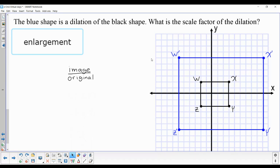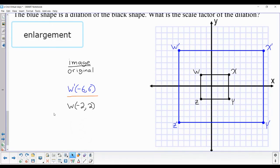to put one of the image points over the original point, or values. So if I take the image of point W and put it over the original point W, just divide the x's and y's separately. Negative 6 divided by negative 2 would be 3, and 6 divided by 2 would also be 3.